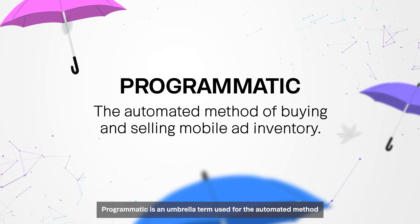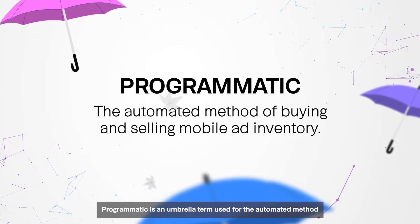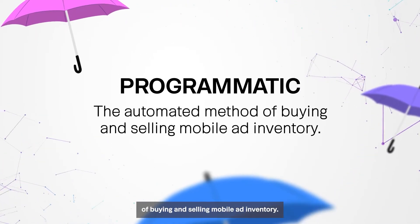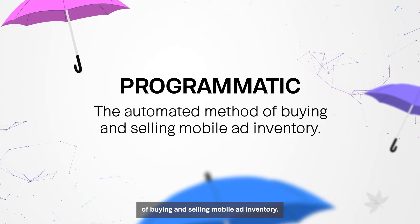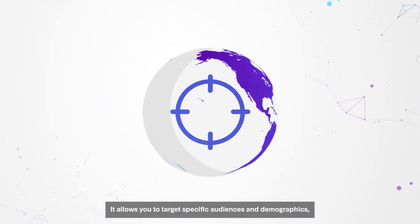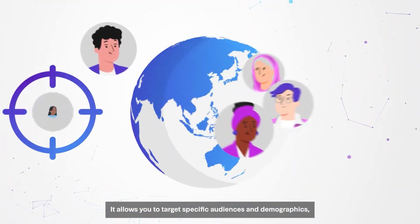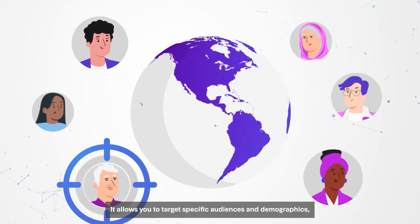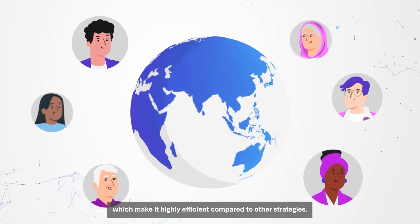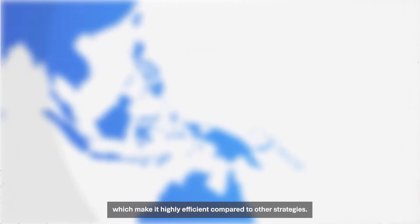Programmatic is an umbrella term used for the automated method of buying and selling mobile ad inventory. It allows you to target specific audiences and demographics, which makes it highly efficient compared to other strategies.